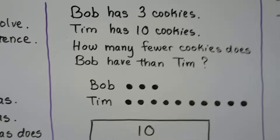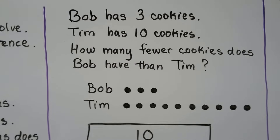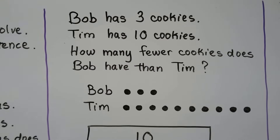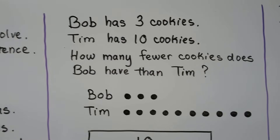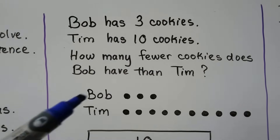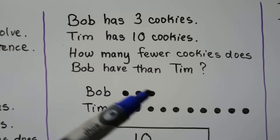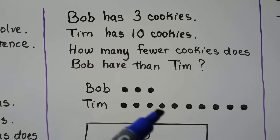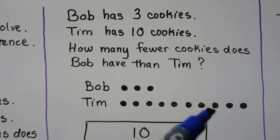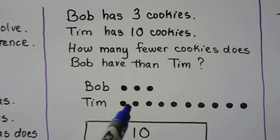We can do it again. Bob has three cookies. Tim has ten cookies. How many fewer cookies does Bob have than Tim? Each dot is a cookie — one, two, three for Bob, and one through ten for Tim. We can see the difference.